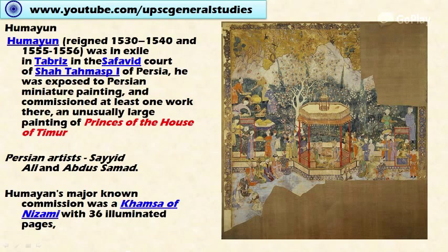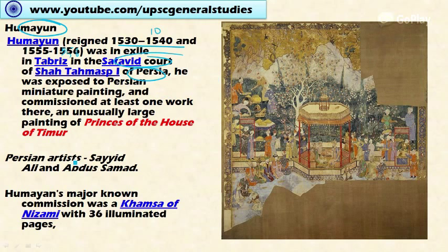Now let's look at the Mughal school of painting under various rulers. First, Humayun. He ruled Delhi during two periods: from 1530 to 1540 for ten years, and then after being defeated he was exiled to Persia, to the court of the Safavid ruler. He came back to India in 1555 and ruled for only one year before he died in an accident — he fell from the top of a building.